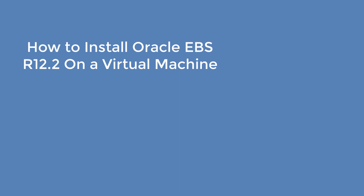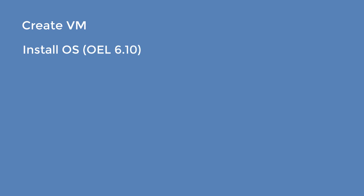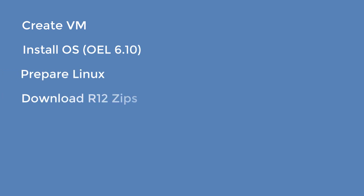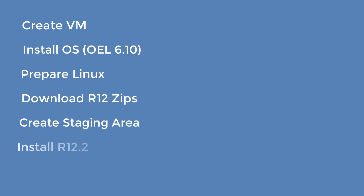What's going on everybody, Matthew Clancy here. Today I'm going to show you how to install Oracle EBS Release 12.2 on a virtual machine. In order to do that, we need to create a virtual machine, install an OS — that's Linux — prepare that Linux, and download the R12 zips from Oracle.